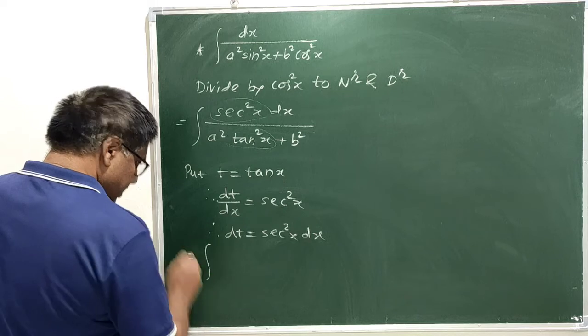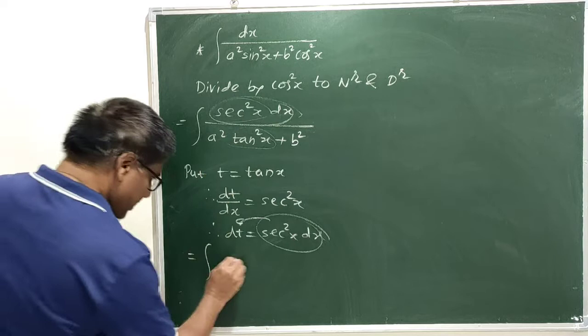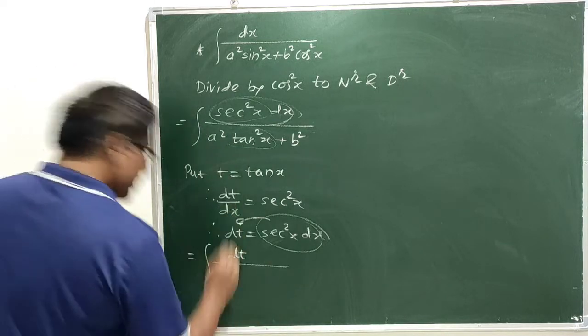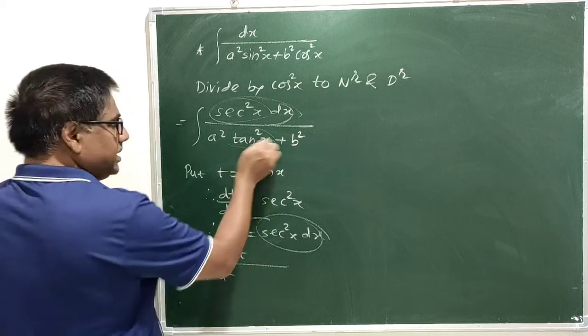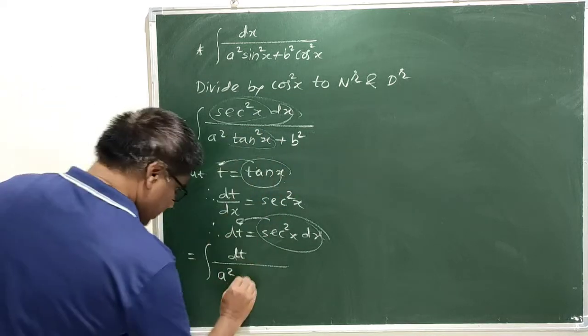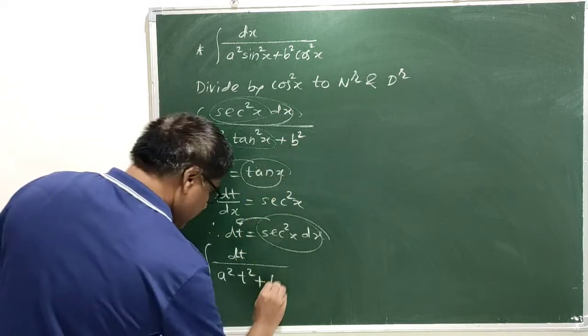Now, our problem becomes integral of this sec square x dx can be replaced by dt. dt upon a square into tan square x, value of tan x is t. Therefore, this becomes a square t square plus b square as it is.